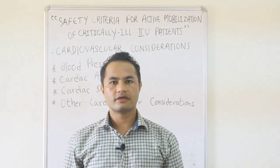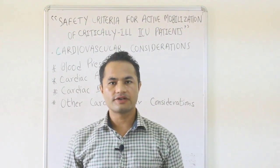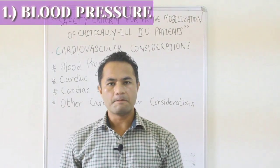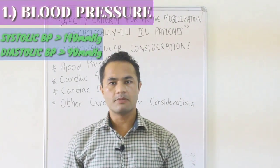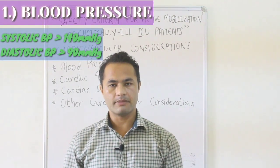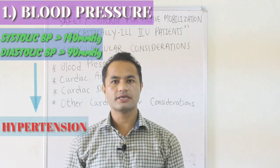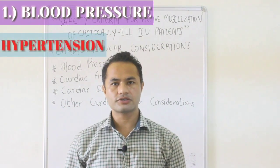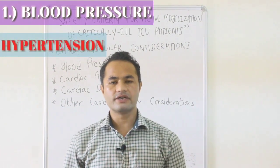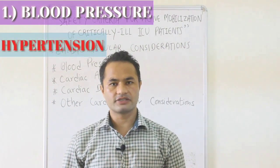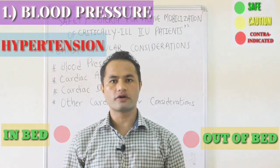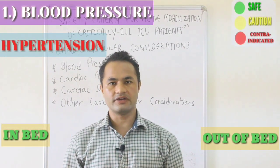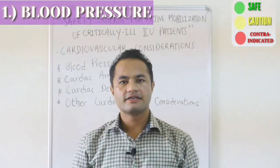We'll begin with our first cardiovascular consideration: blood pressure. Blood pressure above 140/90 mmHg is considered hypertension. Patients on intravenous antihypertensive therapy are strictly contraindicated for any activity, whether in or out of bed.